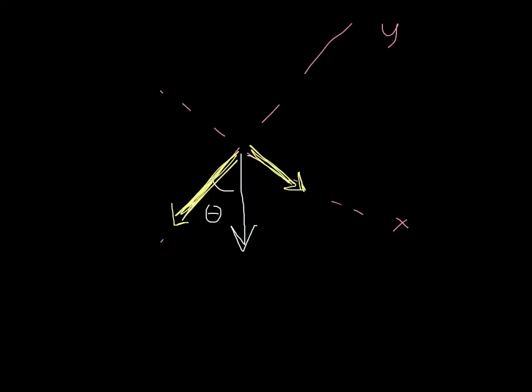We're going to find the components of our weight vector by resolving it, that is to say projecting it against the two axes x and y. So we can find the y component, which is this yellow arrow, by saying that F w y must be equal to the length of the weight vector F w multiplied by the cosine of theta, because it's adjacent to that angle.